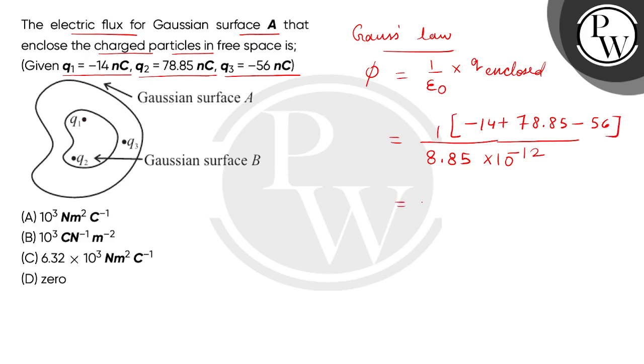Here we get the numerator: 8.85. Because charges are in nanocoulombs, this is 10 to the power minus 9 divided by 8.85 multiplied by 10 to the power minus 12. We will get the net answer for electric flux: 10 to the power 3.